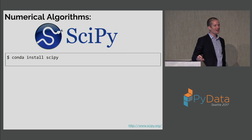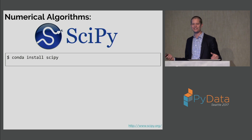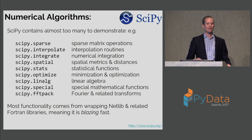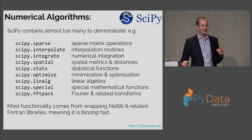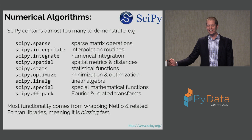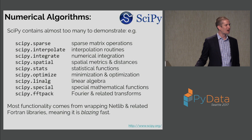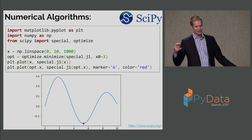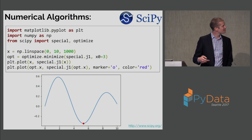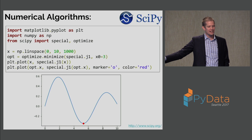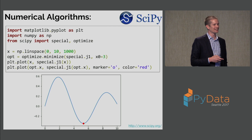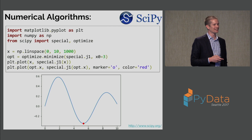For numerical algorithms, SciPy is the package. SciPy started as a wrapper of netlib — a whole bunch of Fortran libraries that do things like integration, interpolation, and optimization really efficiently. SciPy contains many submodules that are essentially wrappers around these Fortran operations that go really fast. As an example, we can import the special library for special functions and the optimize library, and find the minimum of the first-order Bessel function and plot it. Basically any numerical operation you want to do, SciPy will have it. Especially if you're a physicist, SciPy is great.